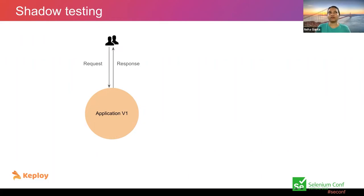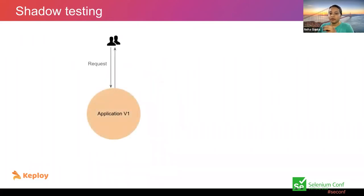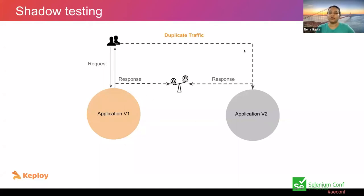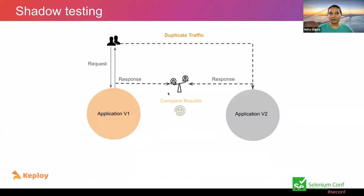The first approach was shadow testing. You have a stable application running in production serving traffic. For the same application you create a new deployment version, deploy it without releasing it to production, and mirror or duplicate the traffic to that new version. You then compare the responses — if they match, you're good to go. This works well if you're using a stateless application like audio streaming.